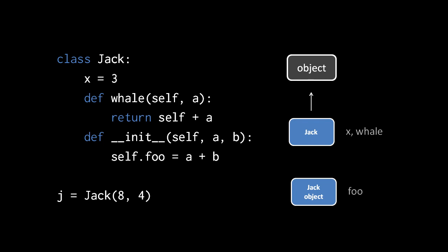well, per usual, the new Jack instance is passed to self, but 8 here is passed to a, and 4 is passed to b. So when we add a and b, we get 12, and so 12 is assigned to the attribute foo of the new Jack object.